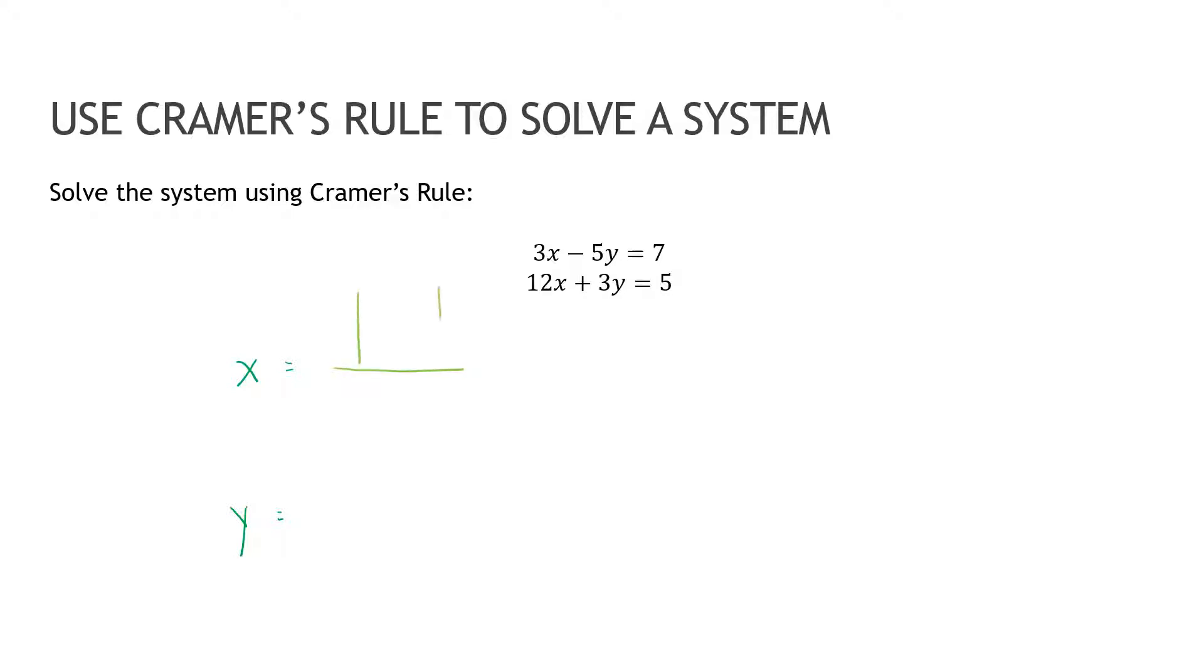So I'm going to do one each way just so you can see. If I'm doing the first way, whoops, I'm going to use a different color there. Then on top, remember, this is going to be the determinant of the X matrix. And on the bottom is going to be just my normal determinant. So that's going to, this one on the bottom is three, negative five, twelve, three.